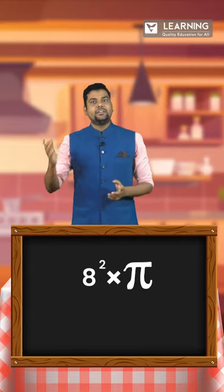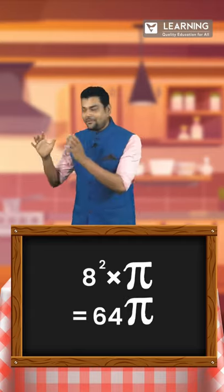Let's take the bigger one. The area of the bigger pizza will be equal to 8 squared into pi, that is 64 pi — still double the size of the two small pizzas combined. I am going to take the big one.